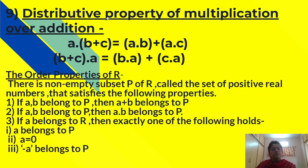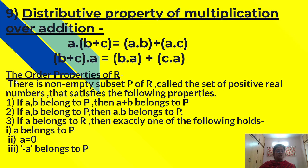Ninth property: distributive property of multiplication over addition. It means that a into (b plus c) is equal to a into b plus a into c, and (b plus c) into a is equal to b into a plus c into a. Now we will see the order properties of R.